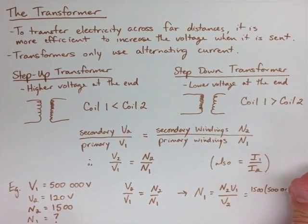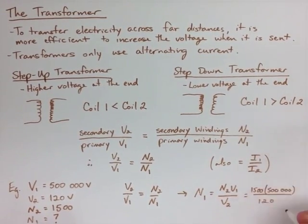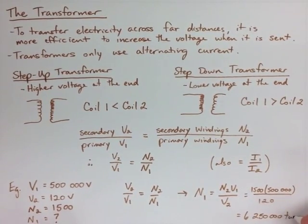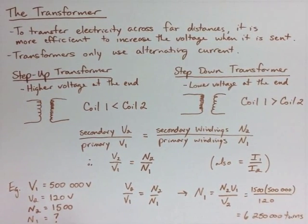When we substitute our values in, we find that we get 6,250,000 turns, which is a lot of turns compared to the second value that we have of 1,500. This is an actual good number for the number of turns in this transformer. These are likely answers that you would get in your books.